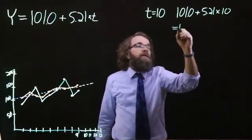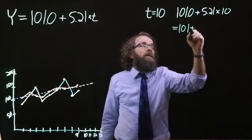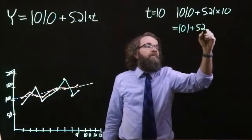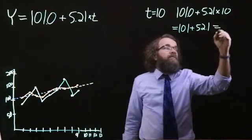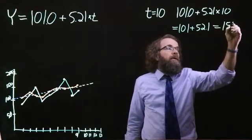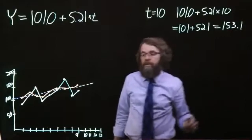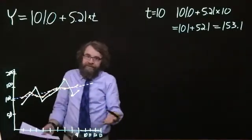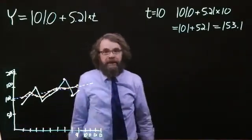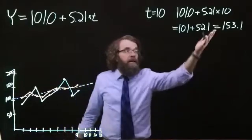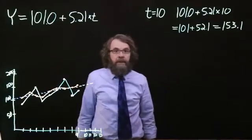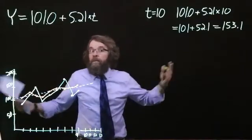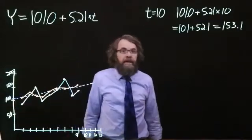This gives us 101 plus 52.1 equals a straight line forecast of 153.1, and that's what my line looks like. It's so sloppy, it's hard to tell, but at least it passes the rough eyeball test. It looks like it's approximately in the same place. That's the process. It's just that simple.